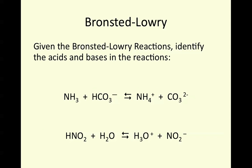Here we've given you two examples of some Bronsted-Lowry reactions. Go ahead and see if you can identify the acid and the base based on the movement of a proton. You should come up with our first one — NH3 — acting as a base because the hydrogen is being donated to ammonia. In our second example, the hydrogen is moving from the first reactant to water to make our hydronium concentration, so H2O is gaining that proton to become H3O+, making it our base, and the first reactant our acid.